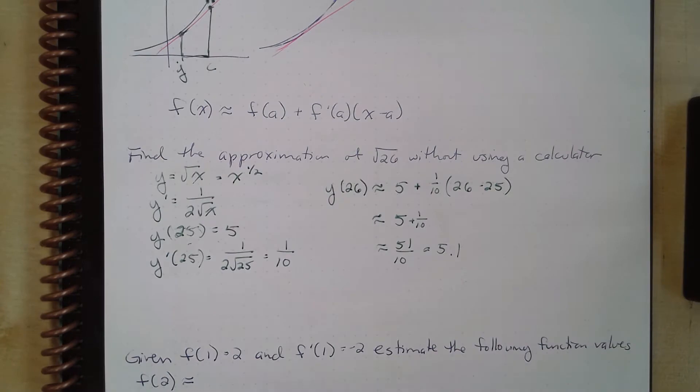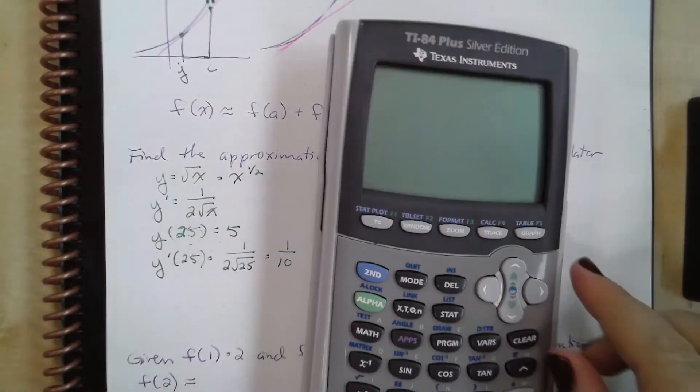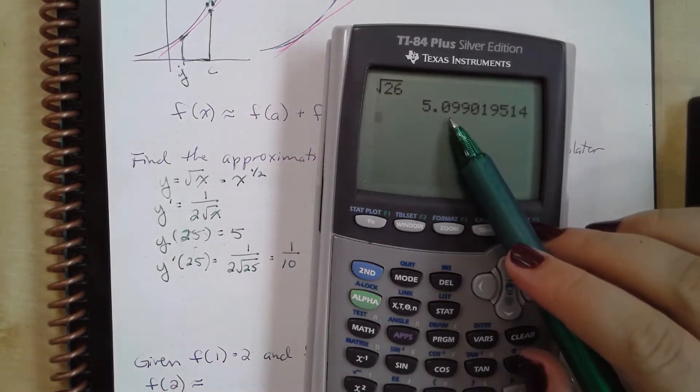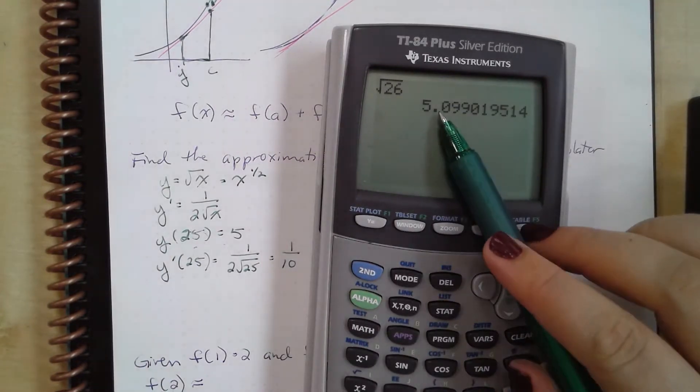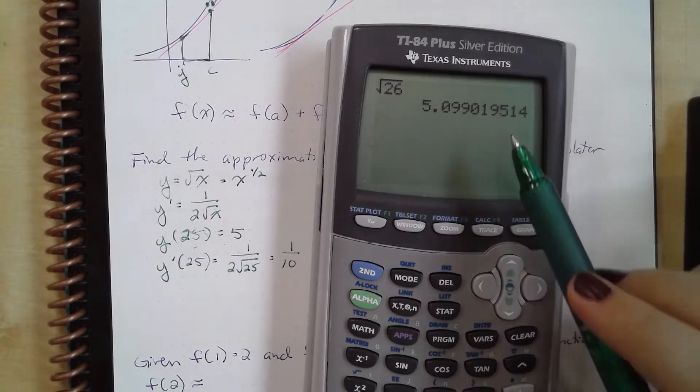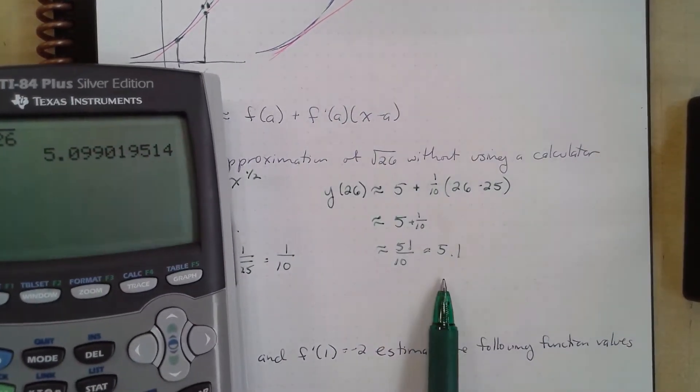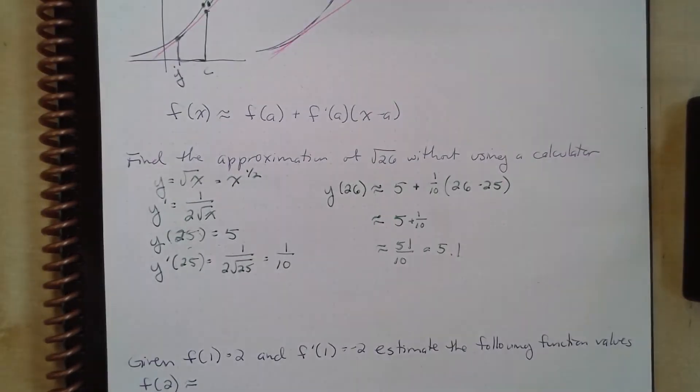And actually, if I go to my calculator, I can test this. The square root of 26 is 5.0990195. You can see we actually got very close to our answer. We approximated this. So let's do a few more here.